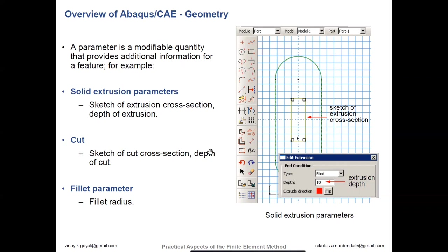It's important that when working with Abaqus at the bottom of the screen there is always a dialogue box. Whenever you're trying to interact with it, there will usually be text at the bottom prompting the user for information. For example, if you're trying to use a fillet radius, it'll first ask you to pick the lines you want it to be applied to, and then the next question will be what radius do you want to use, and that will pop up at the bottom.